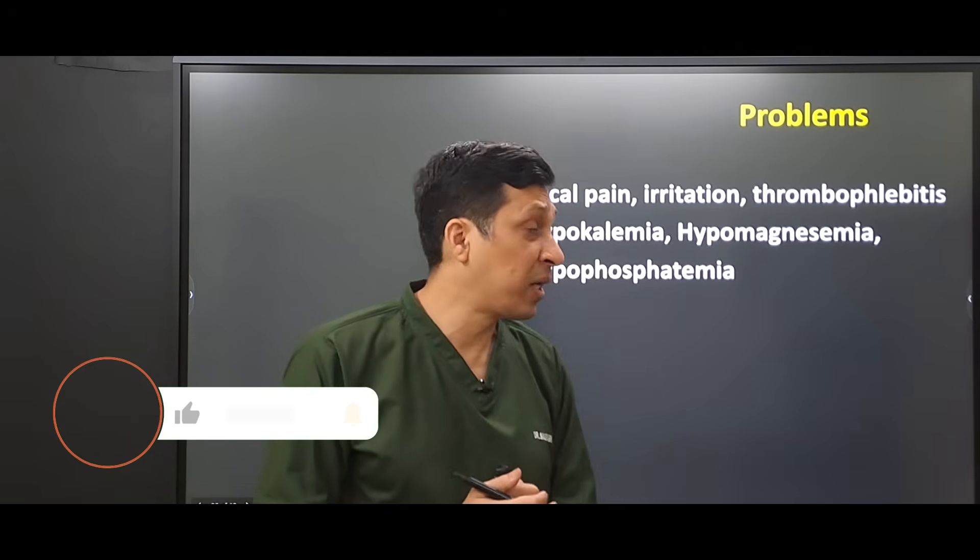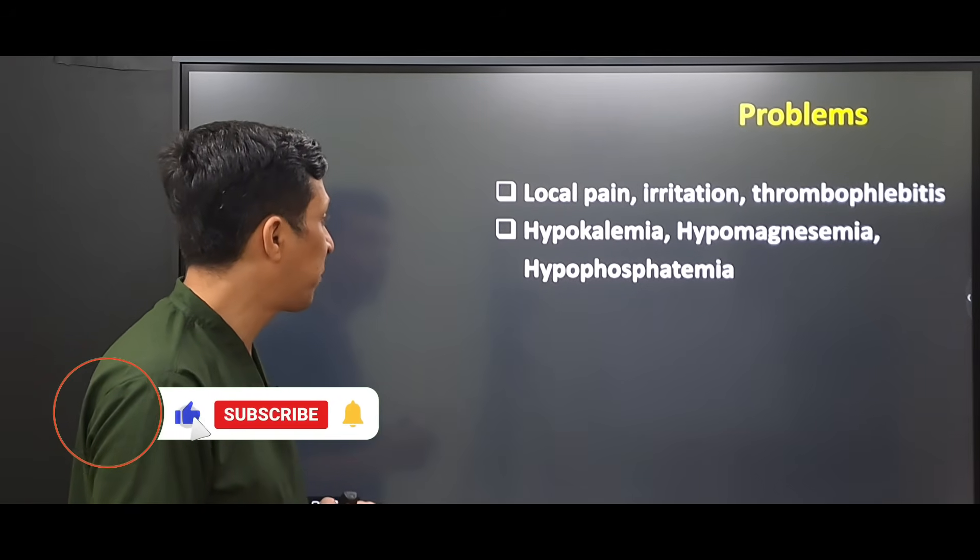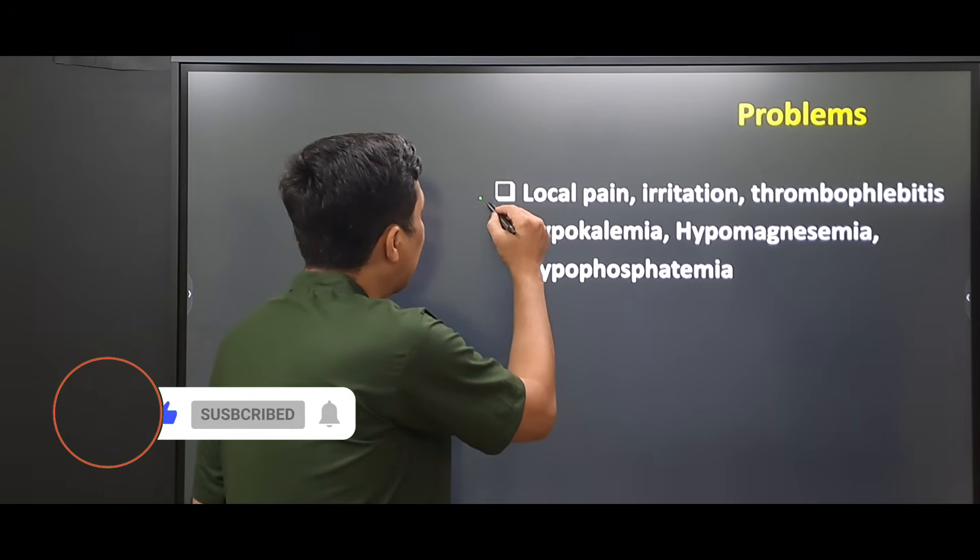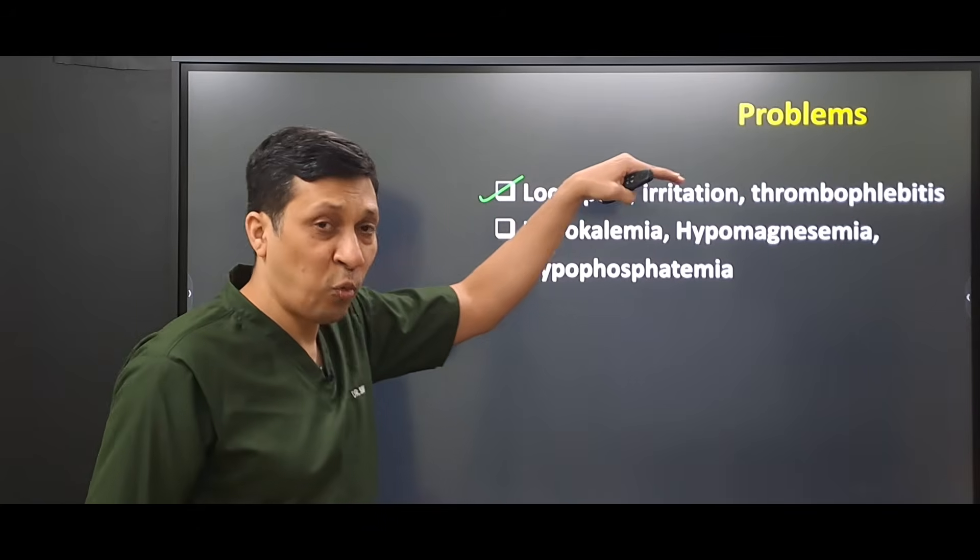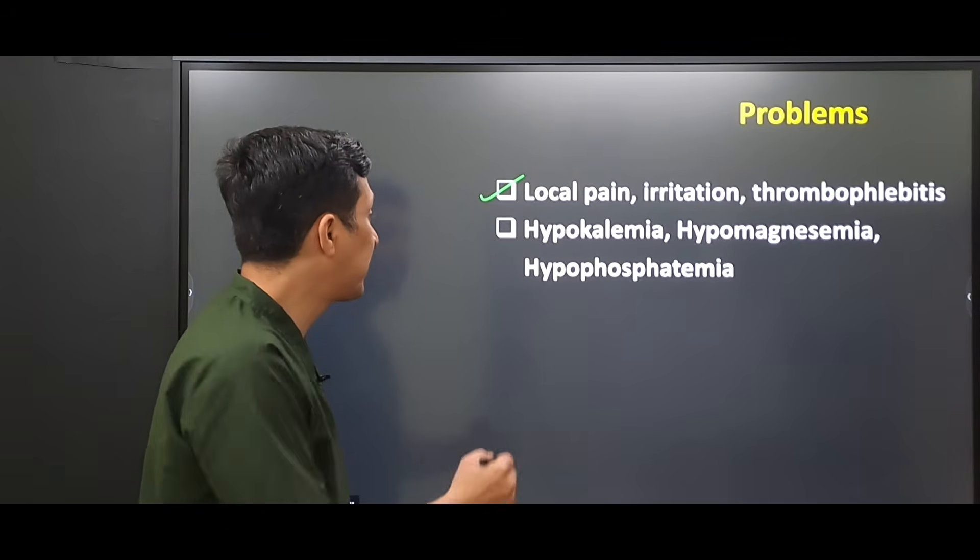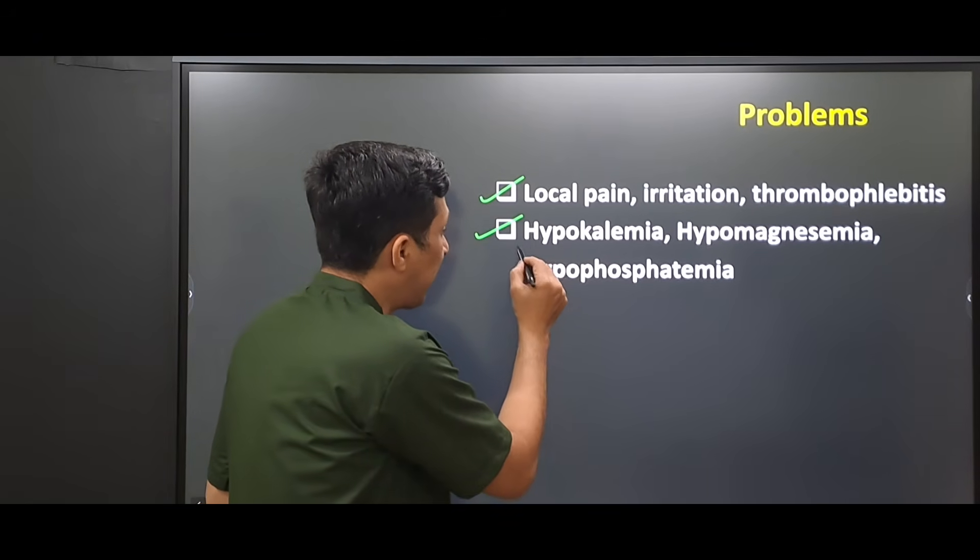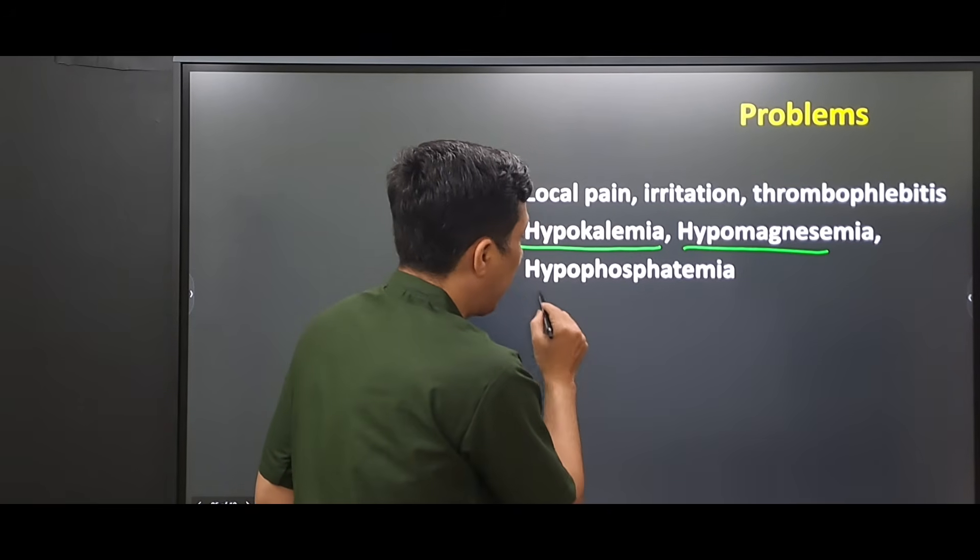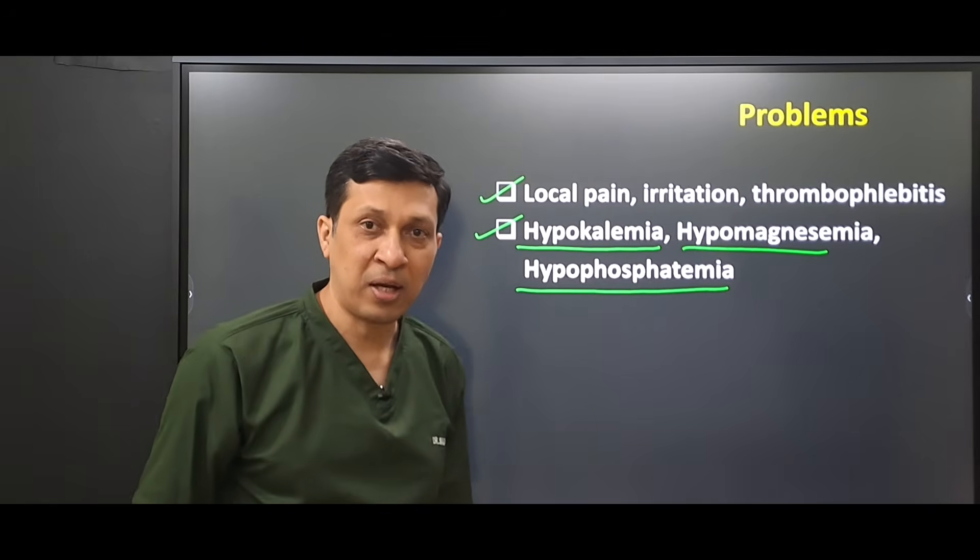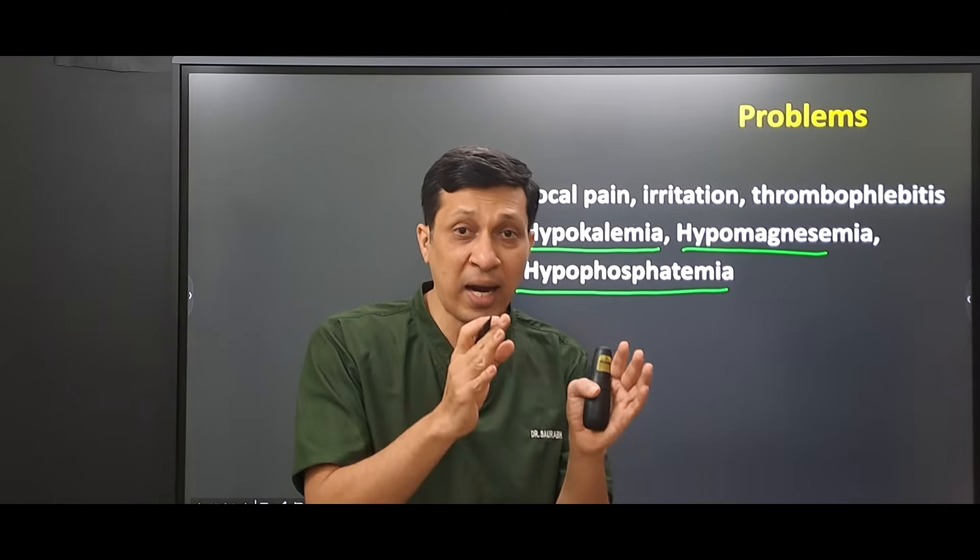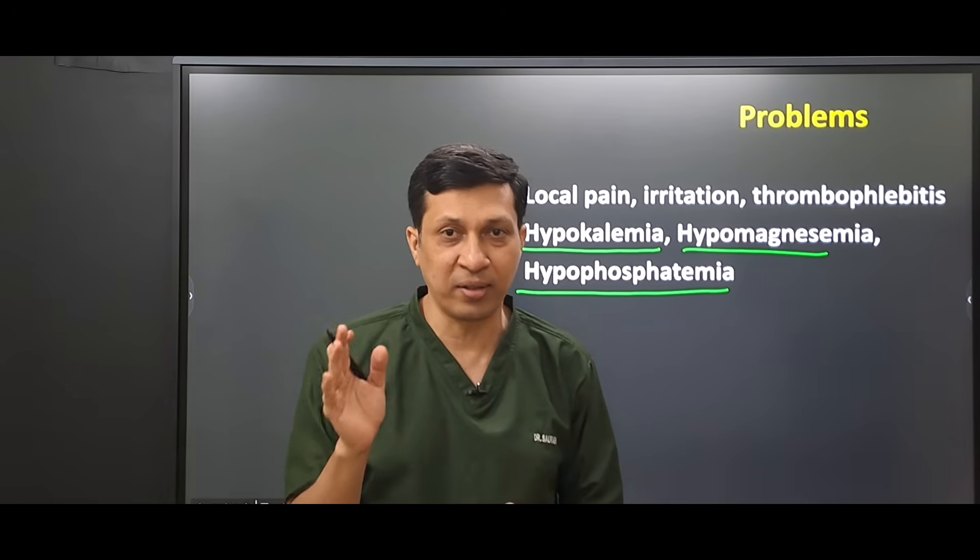Now, what are the problems one can face while giving dextrose 5%? As it contains dextrose, it can lead to local pain, vein irritation, or thrombophlebitis. And if this fluid is given for a long time, there can be hypokalemia, hypomagnesemia, and hypophosphatemia. So if you are giving this fluid for a longer time, then you have to add electrolytes in the fluid.